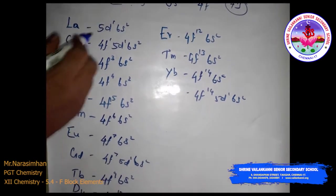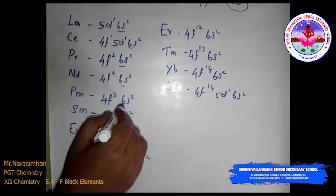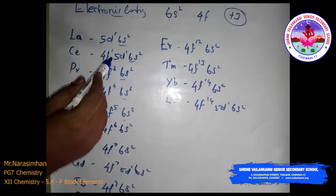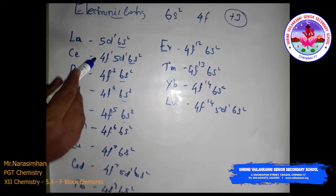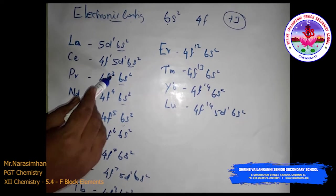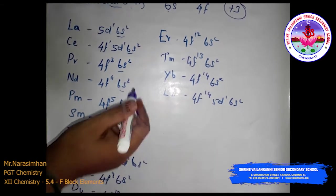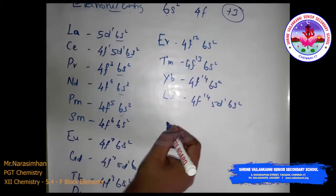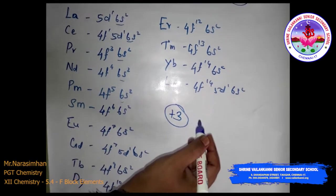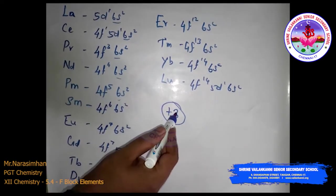All these lanthanide elements have the common electronic configuration 6S2. The variation is in the 4F level — lanthanum does not have any 4F orbital, but from cerium onward, the 4F and 5D orbitals are involved. Due to these variations, they exhibit variable oxidation states. However, the common oxidation state for all elements is +3. Sometimes they also exhibit +2 and +4, but +3 is the most important one.